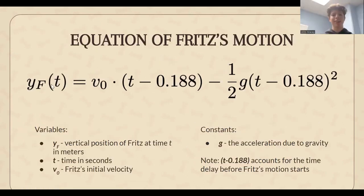And then for Fritz's motion, our equation is the standard kinematics equation for vertical position of a projectile object, but we had to account for a time delay due to Fritz's reaction time. To incorporate this, t minus 0.188 was substituted for t representing the 0.188 second duration that passes as Fritz reacts to the food being thrown to him.